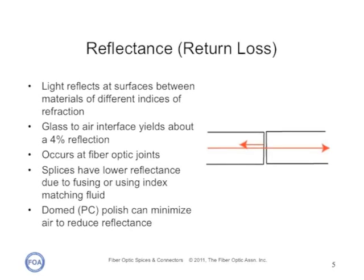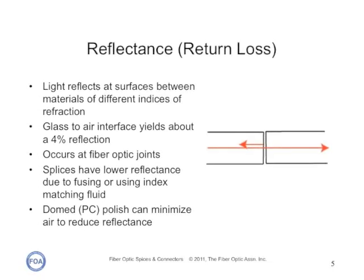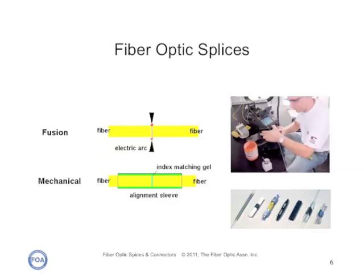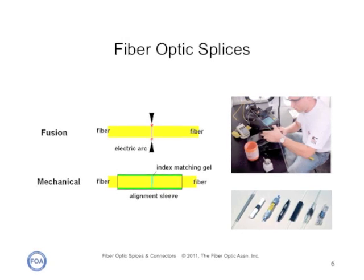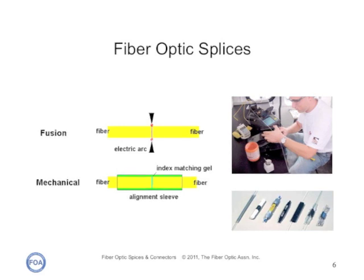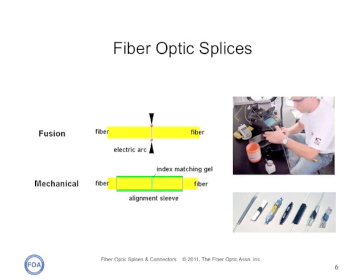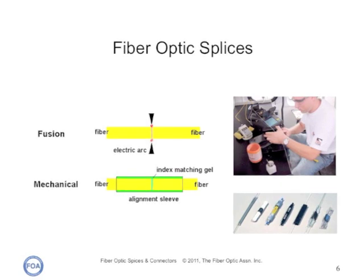There are two types of fiber optic splices: fusion and mechanical. Fusion splices are made by welding two fibers together, typically with an electric arc. Mechanical splices use some kind of alignment sleeve and an index matching gel to mechanically hold two fibers in alignment, which are then crimped.